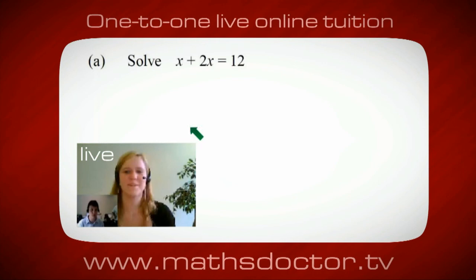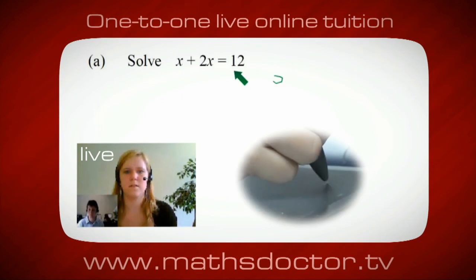Okay Marie, so let's have a look at this one. Solve x plus 2x equals 12. So what do you think you do first? Okay, well, I want x on its own, so I would put x equals 12 minus 2x.